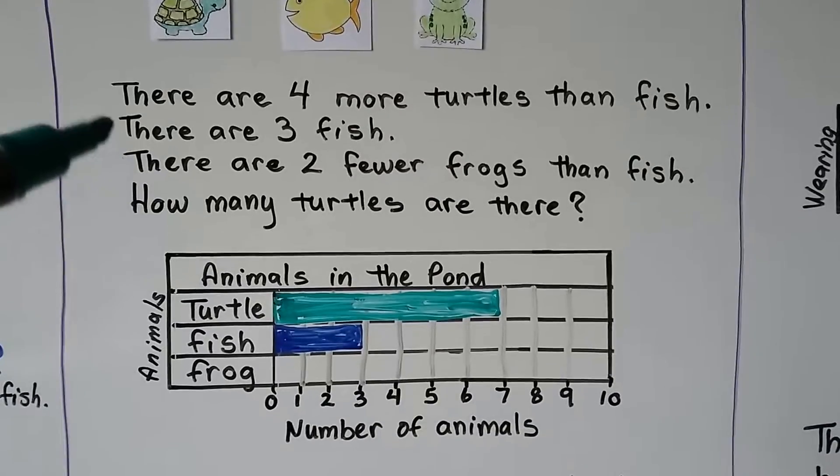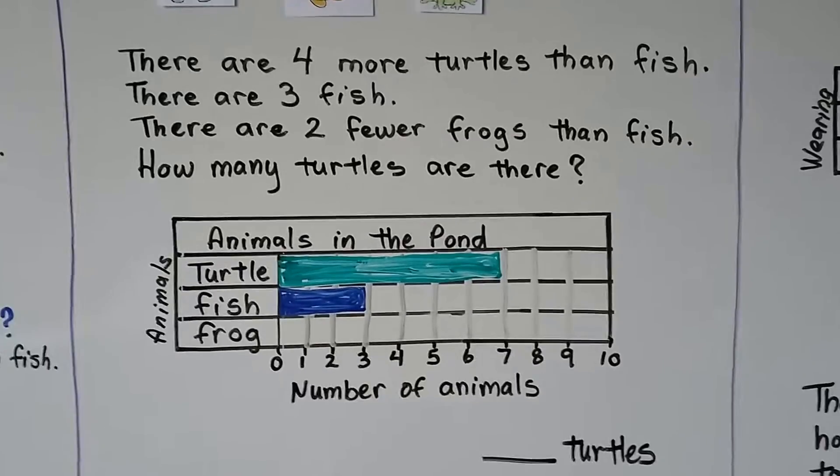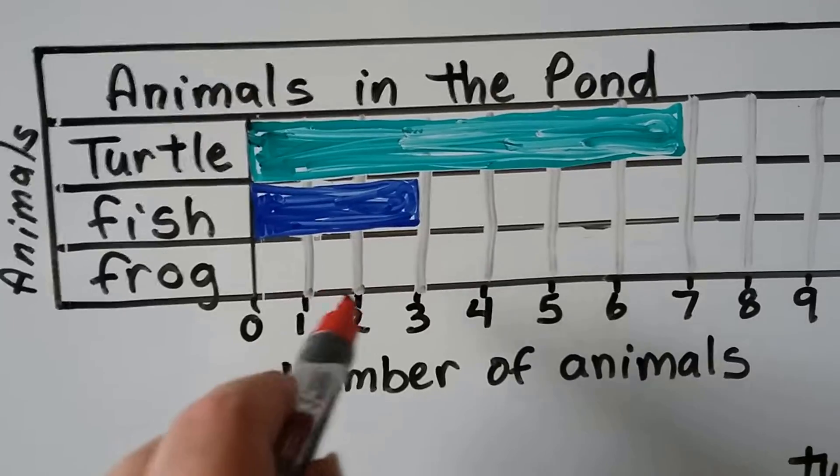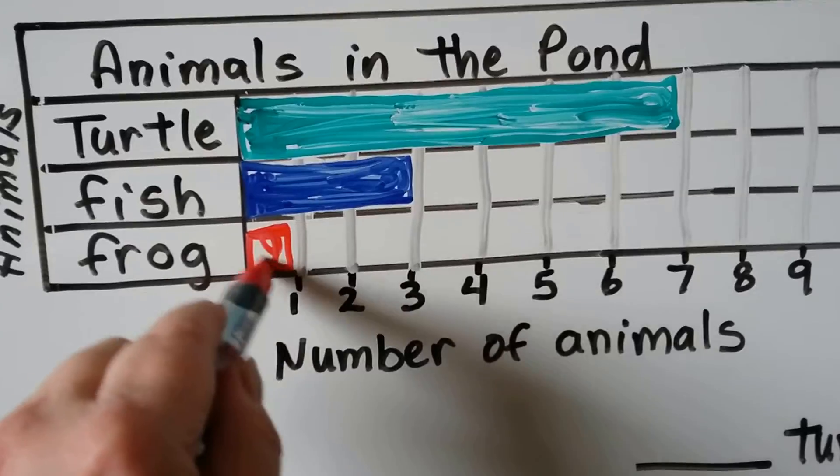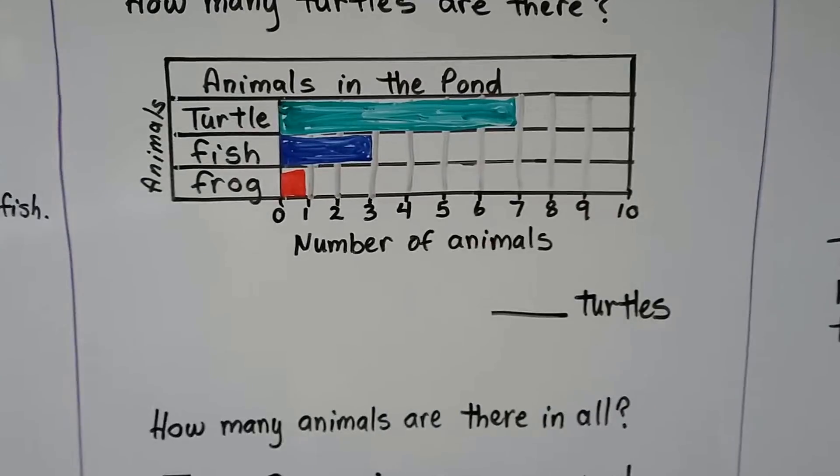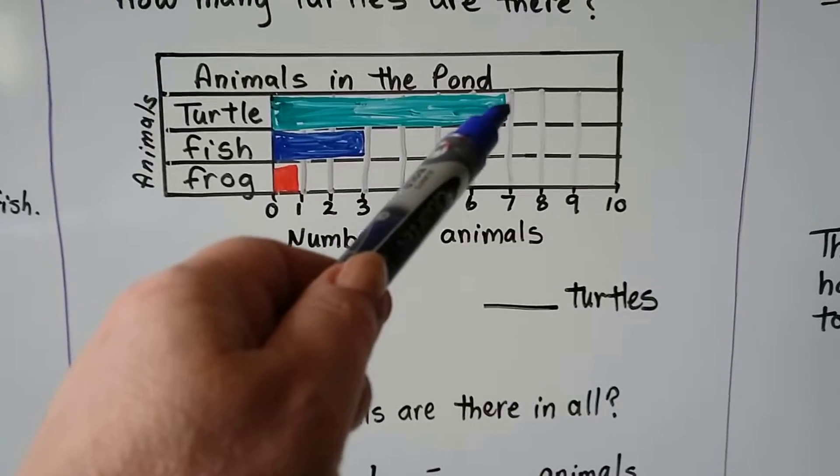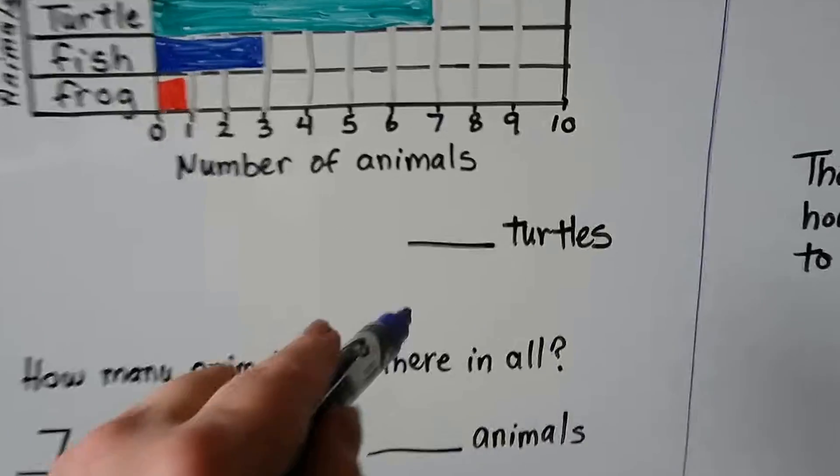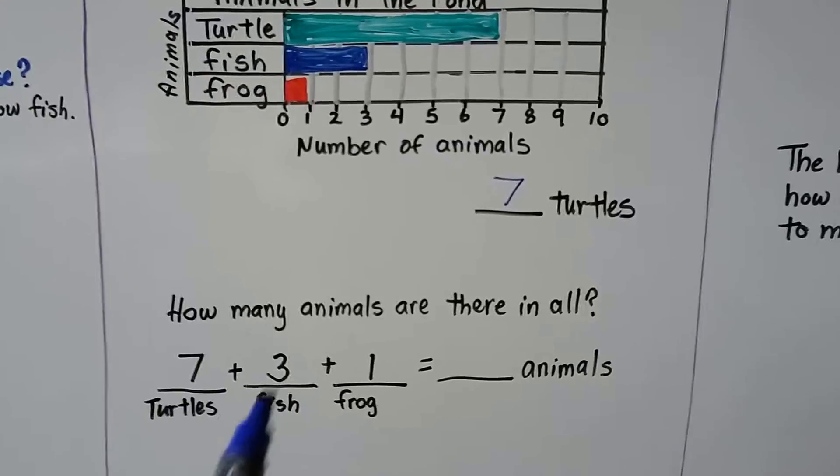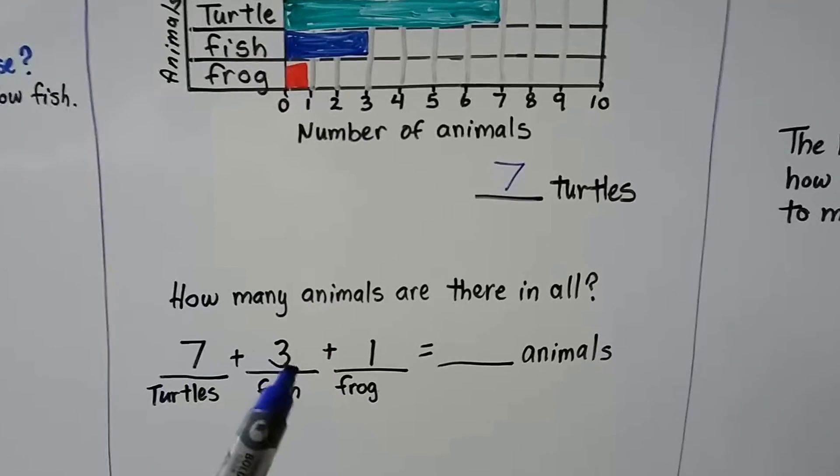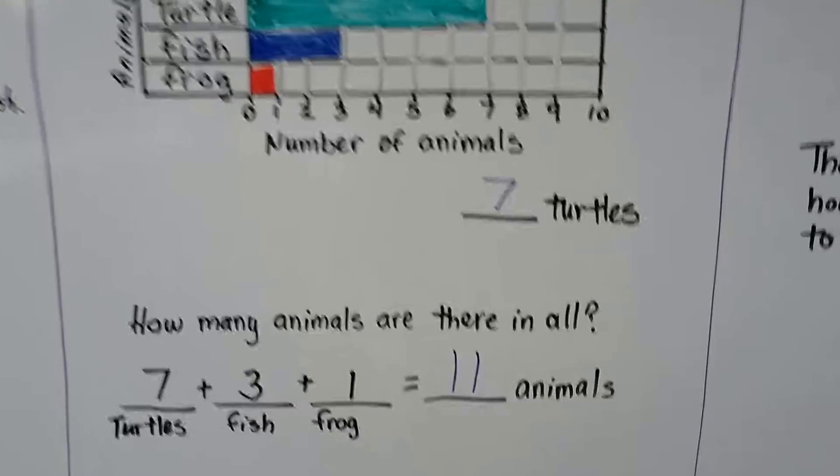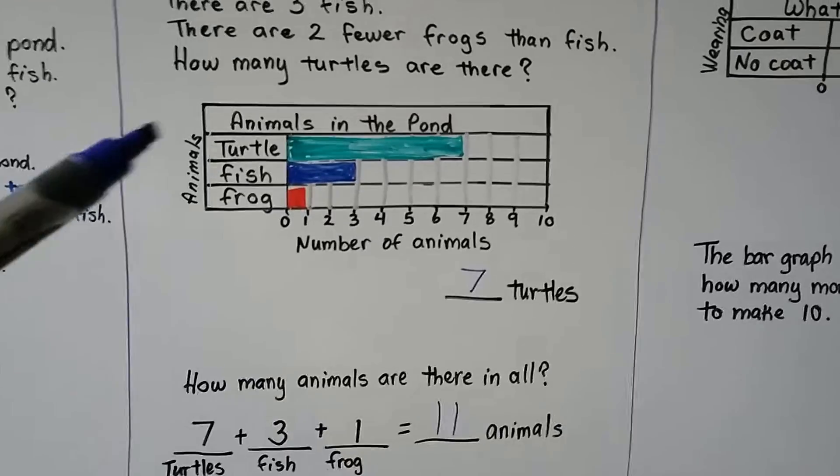Now it says there are two fewer frogs than fish. Well, there's three fish, and if there's two fewer, that means there's two less. So we're not going to fill in this square or this square. We're only going to fill in this one because that would be two fewer. Now we know the number of animals in the pond. How many turtles are there? We can follow the bar and then follow the line down and see there's seven. There's seven turtles. And how many animals are there in all? Well, we have seven turtles. We have three fish and one frog. We can add the seven plus three. That's seven, eight, nine, ten, and one more is eleven. There's eleven animals. Making the bar graph made it easy for us to do four more and two fewer.